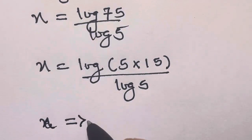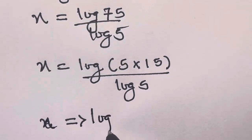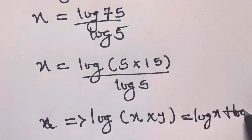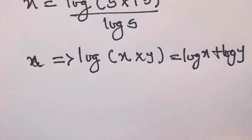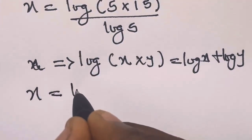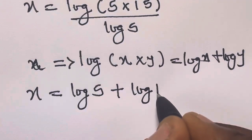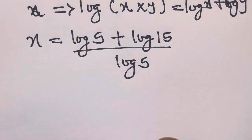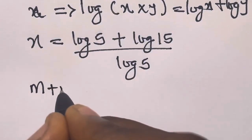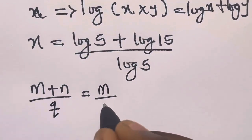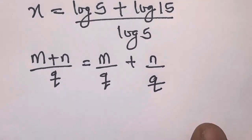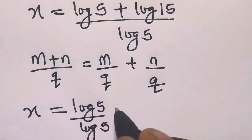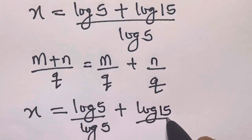Recall from the law of logarithms that log of x times y equals log x plus log y. Applying this to log of 5 times 15, we have x equals log 5 plus log 15, all divided by log 5. We can split this fraction: x equals log 5 divided by log 5, plus log 15 divided by log 5.